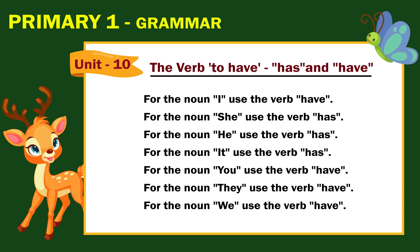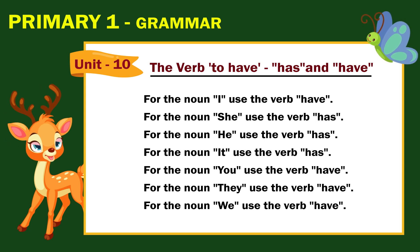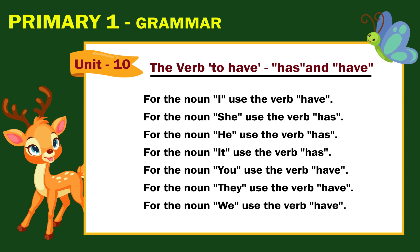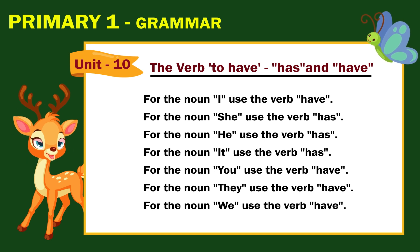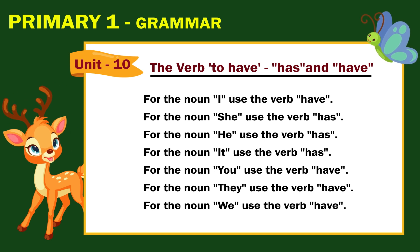For the noun I, use the verb have. For the noun she, use the verb has. For the noun he, use the verb has. For the noun it, use the verb has. For the noun you, use the verb have. For the noun they, use the verb have. For the noun we, use the verb have.